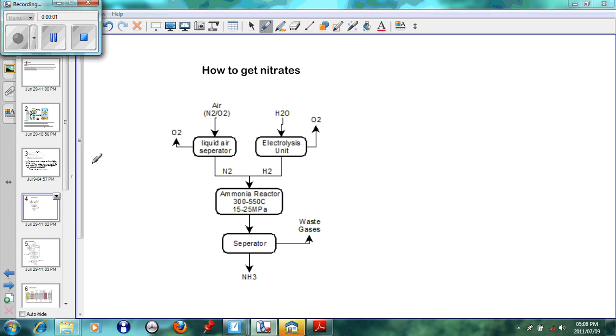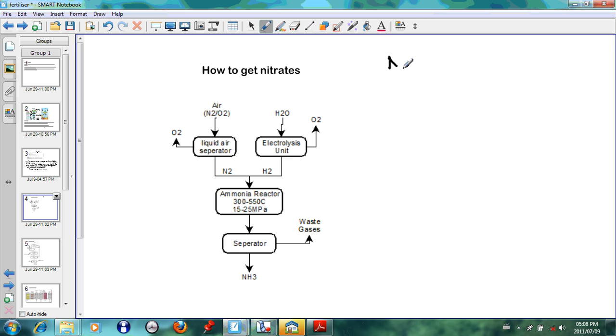Assalamu alaikum warahmatullahi wabarakatuh. We are still busy with fertilizers and we were discussing that in order to gain fertilizers we have to create certain salts like ammonium nitrate, potassium nitrate, etc. And in order to do that, how do we get the nitrates? We have to create certain chemicals. The first chemical we're going to create and look at the industrial process is